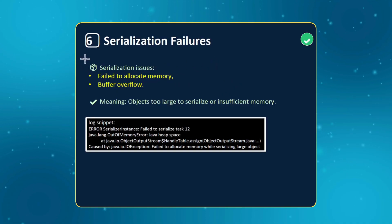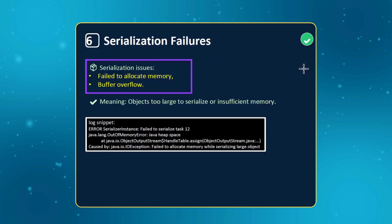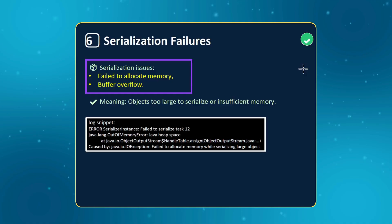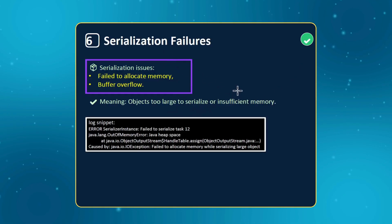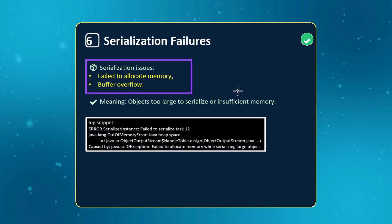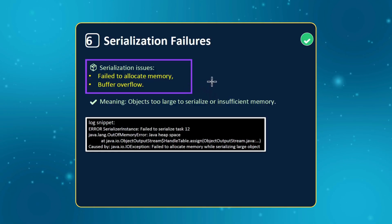The next one is serialization failures. If you see something like 'failed to allocate memory', 'buffer overflow', size exceeding limits, or serialized files being too large, this is mostly related to serialization failures. The problem here is that it is trying to concatenate a large amount of data into a single object and serialize it — that's where it faces insufficient memory. In such cases, you need to increase the memory or tackle the particular data structure you are trying to serialize.